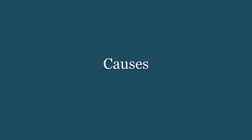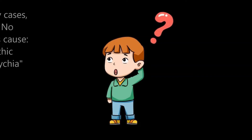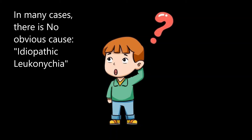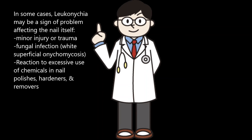Let's talk now about possible causes of leukonychia. In many cases, there is no obvious cause — this is what we call idiopathic leukonychia. In other words, many healthy individuals may develop white spots on the nails at some point in their lives without it being of concern. In some cases, leukonychia may be a sign of an underlying problem in the nail itself. It could be a minor injury or trauma, or it might be a reaction to excessive use of chemicals in nail polishes, hardeners, and removers. Or sometimes it is superficial white onychomycosis — a fancy name for superficial fungal infection.